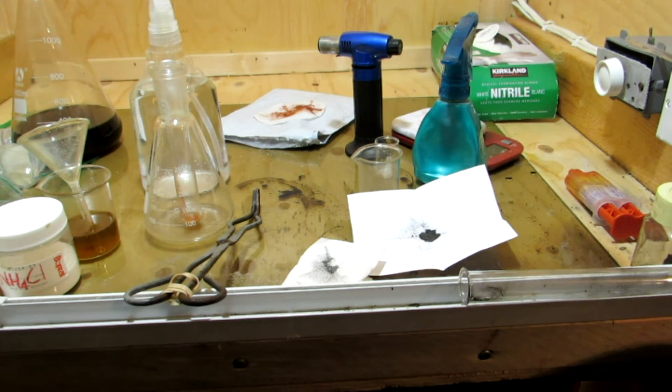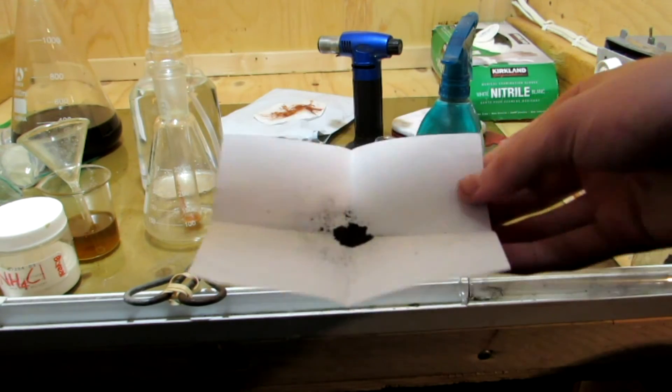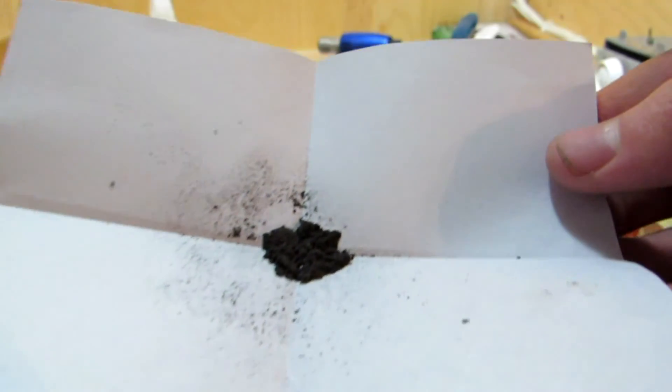After fully decomposing, the platinum powder was scraped out onto a piece of paper. Powdered platinum is actually very useful for chemistry as it is often used as a catalyst where a high surface area is essential.